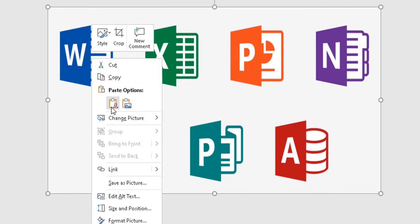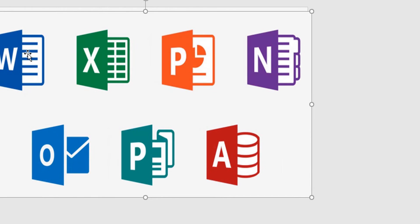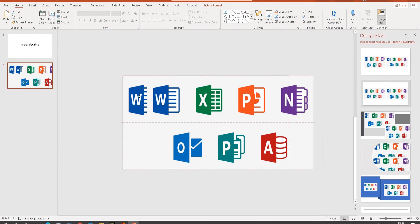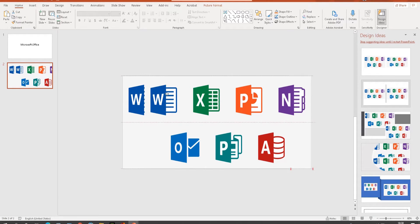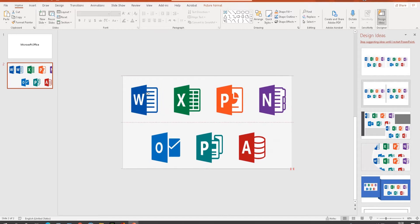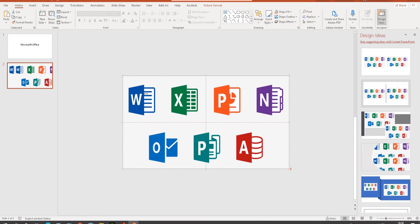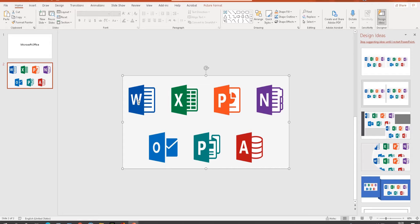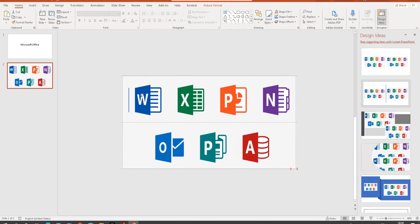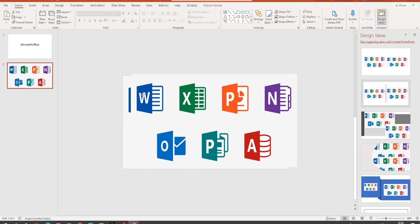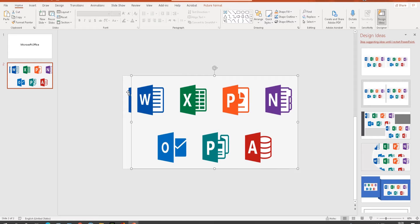I'm going to right-click, copy, then right-click and paste that picture again, so now there are two pictures. One is going to be the background and the other one will sit on top of it. I've got two pictures essentially. Now I want to highlight the background image, so I'm moving the foreground one to the right a little bit so I can see the background picture.